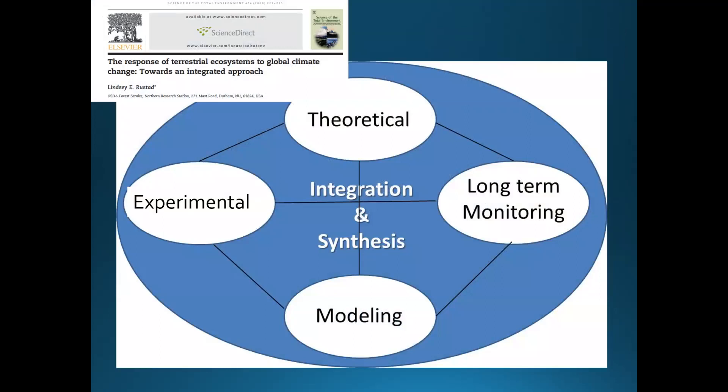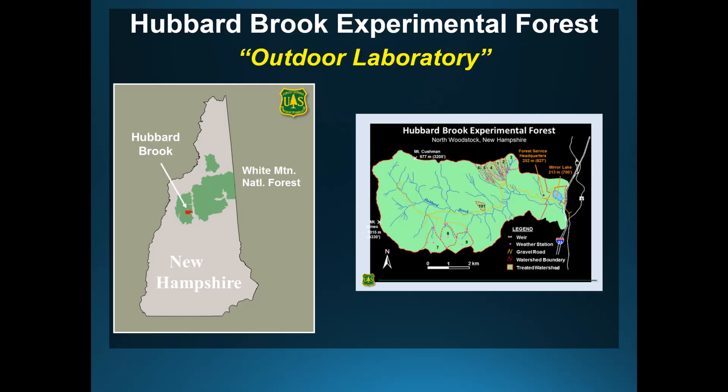As an overview, we adopted an integrated approach — which I advocated in my 2008 paper — and it included theoretical, long-term monitoring, modeling, and experimental components. Due to time constraints, I'm only going to talk about the experiment today. Hubbard Brook is a 3,200 hectare outdoor laboratory in the beautiful White Mountains of New Hampshire. It was established in 1955 by the USDA Forest Service, and is now one of the longest continuously running, most comprehensive ecosystem studies in the world. Because of its infrastructure, long-term forest protection, and its location in the ice storm belt, it's an ideal place to conduct a large-scale forest ice storm experiment.